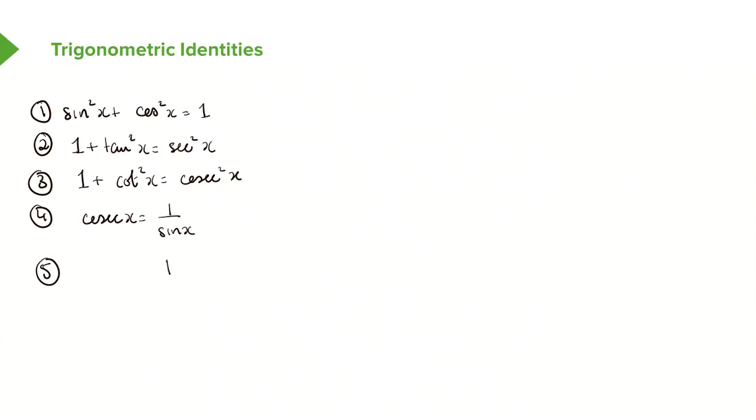Number five, we have 1 over cos x, which is sec x or secant of x. And lastly, we have 1 over tan x, which is cot of x.